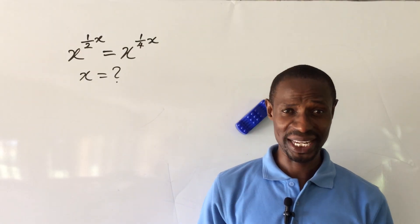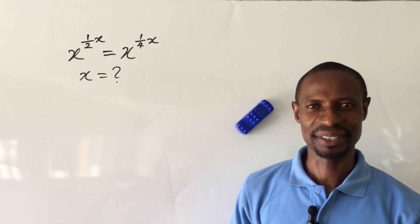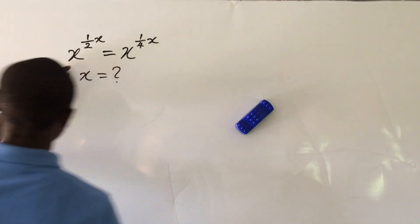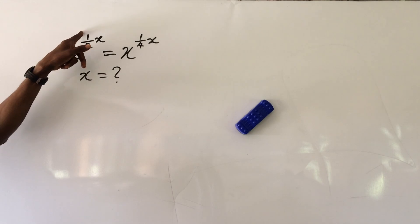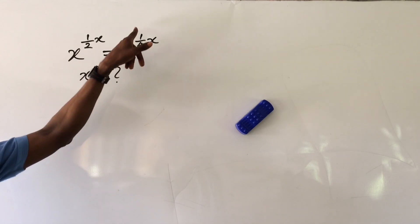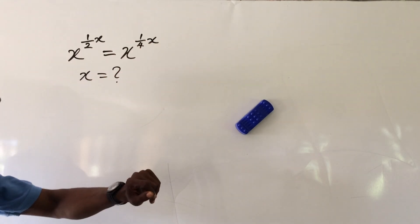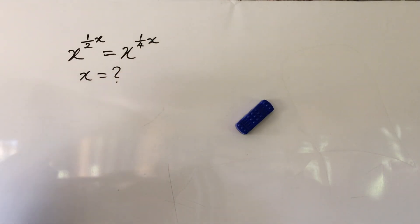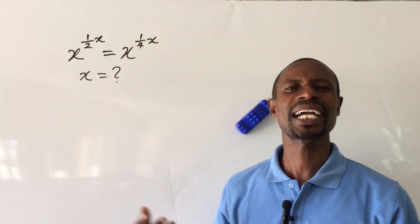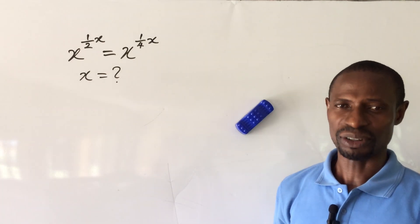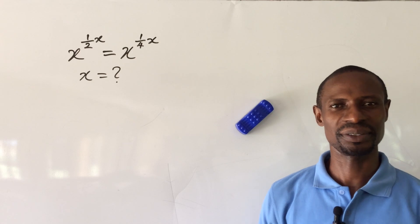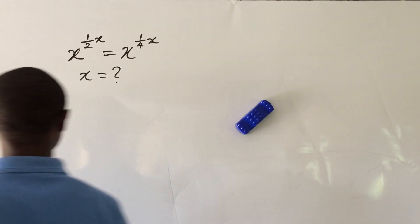Welcome to Online Maths TV, my name is Jake. We have a challenge on the board. The question reads: x to the power of one all over two of x, equal to x to the power of one all over four of x. What will be the possible value of x? Before we go into today's challenge, if you're new to this channel, kindly subscribe and turn on the bell notification so that you get notified whenever we drop a video.